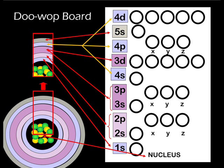Across the bottom of your DUOP board, you will see the word NUCLEUS written, which indicates that everything on the board above the term NUCLEUS will be considered outside the nucleus, or in the electron cloud. The DUOP board represents a section of the electron cloud.